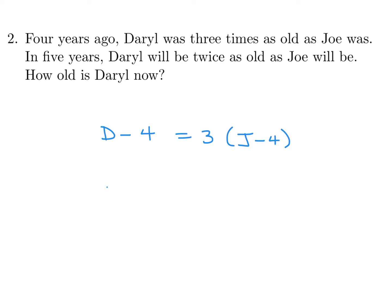Second equation is five years from now, so D plus 5 is equal to two times J plus 5. And we just need to solve those two, so let's see what happens. D minus 4 is 3J minus 12, therefore D is equal to 3J minus 8. And then this next equation, D plus 5 is 2J plus 5.